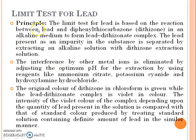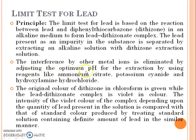Now, the limit test for lead. The principle: The limit test for lead is based on the reaction between lead and diphenyl thiocarbazone, also known as dithizone, in an alkaline medium to form the lead dithizonate complex. The lead present as an impurity is separated by extracting an alkaline solution with dithizone extraction solution. Interference by other metal ions is eliminated by adjusting the optimum pH using reagents like ammonium citrate, potassium cyanide, and hydroxylamine hydrochloride.